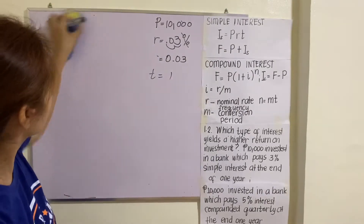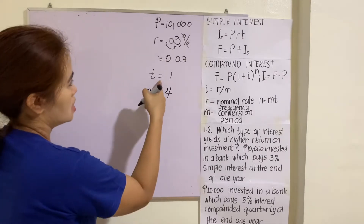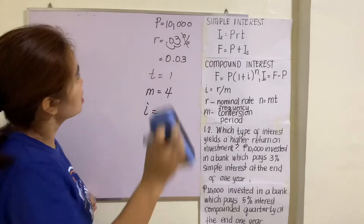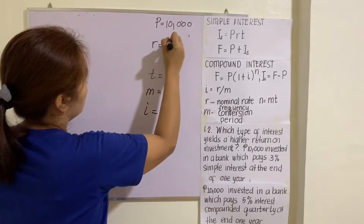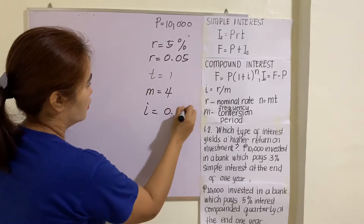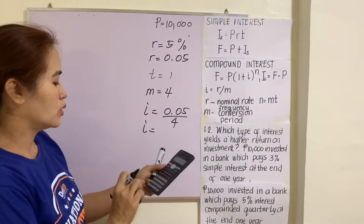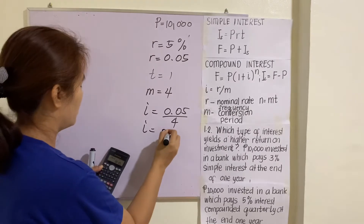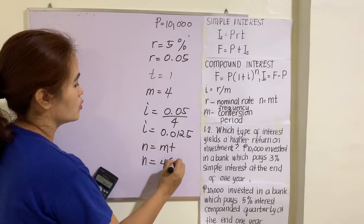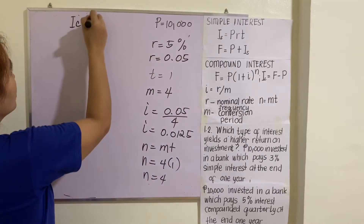For compound interest, let's identify the given. M is compounded quarterly, so M equals four. T is still one. The rate is five percent, so R equals 0.05. I equals R divided by M, which is 0.05 divided by four. Using a calculator, 0.05 divided by four gives I equals 0.0125. N equals M times T, so N equals four times one, giving N equals four.